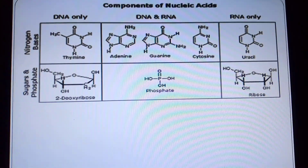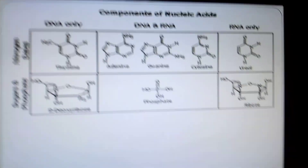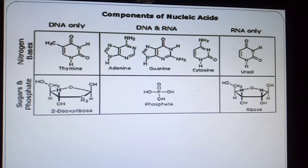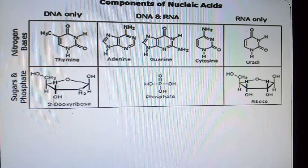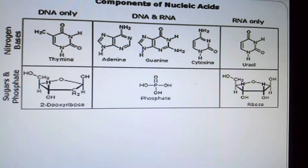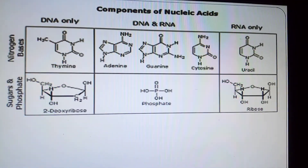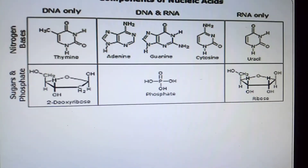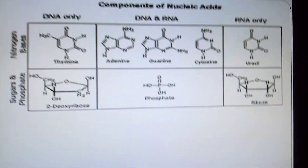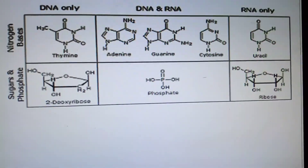The components of nucleic acid include DNA and RNA. This diagram shows DNA only, and the shared components of DNA and RNA, and RNA only. The common components are nitrogen bases, sugar, and phosphate.